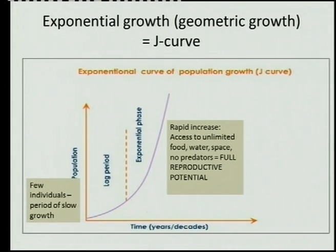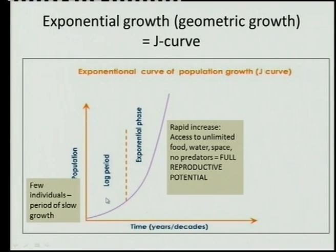We can represent population numbers on graphs, and we actually get two types of population graphs. This is the first one: exponential growth, also called geometric growth, and if we look at the shape, it's called the J-curve.